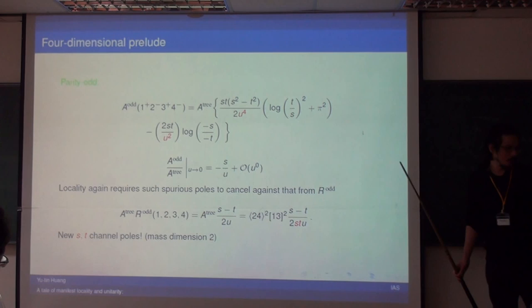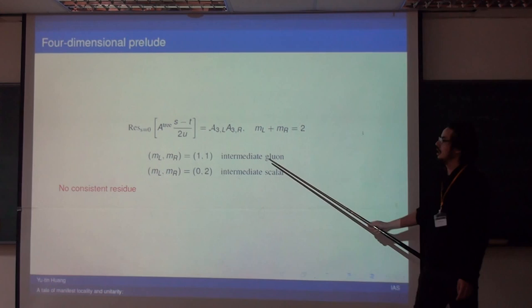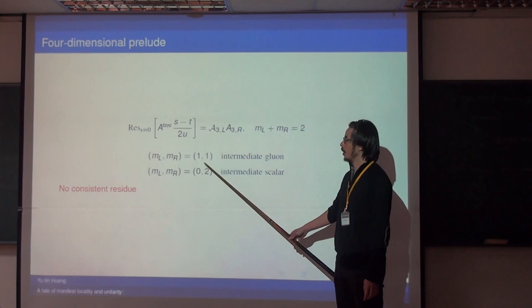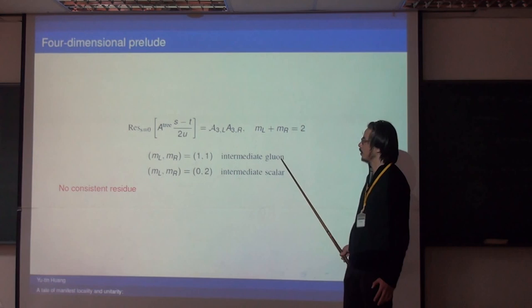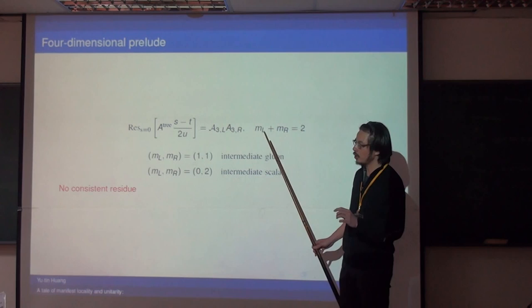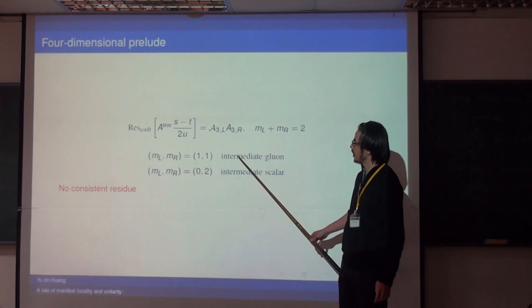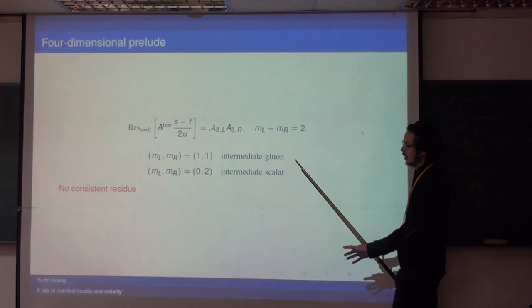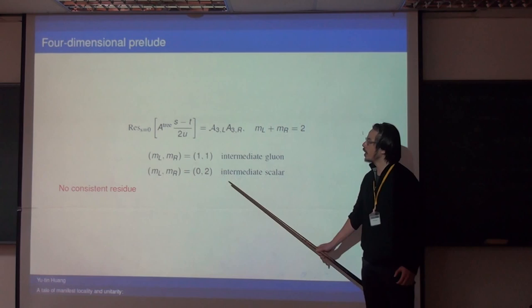We need to understand what this new factorization channel is factorizing into. Counting dimensions, the residue has mass dimension two, so it must factor into two three-point amplitudes whose combined mass dimensions equal two. Helicity weight counting uniquely determines the options: (1,1) must be an intermediate gluon, and (0,2) an intermediate scalar. However, the intermediate gluon case is ruled out because at one loop you should factorize into a one-loop times tree-level amplitude, not a product of two trees. For the scalar, the amplitude has a higher-order pole, so there is no physical interpretation for this residue — it is inconsistent.